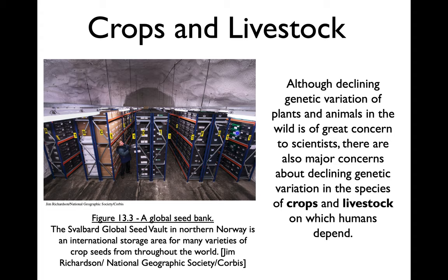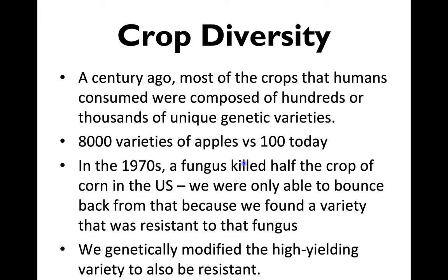The other side of this is also crops and livestock — not just wild animals. Trying to keep crops and livestock genetically diverse is also very important, something scientists spend a lot of time thinking about. One of the first things the book shows is this global seed bank. There are a lot of these around the world. This is an international one where people can store seed varieties. It's built into a mountain to protect it from natural disasters and global warming, kept at a really constant temperature. Thousands of seed varieties are stored there so we don't lose those seeds and can introduce them back if needed.